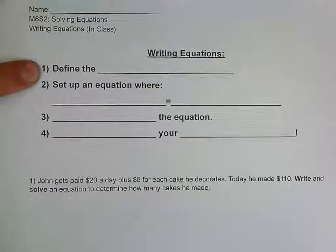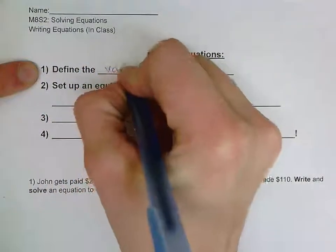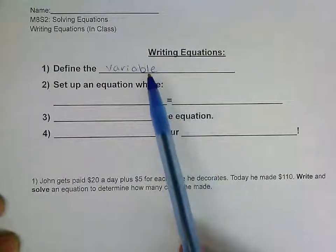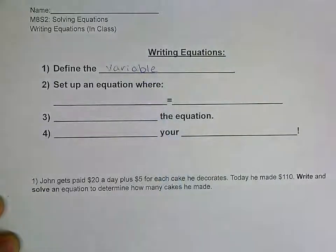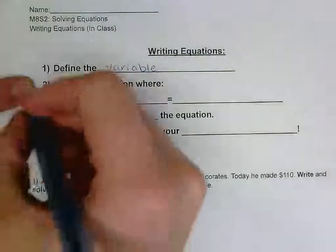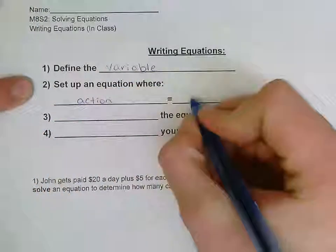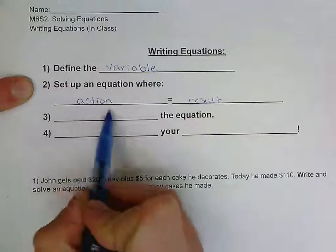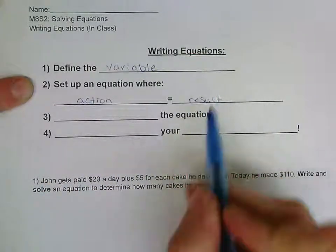The first thing we're always going to do is define the variable. When we define the variable, this is just the letter we're using to represent our unknown — we want to make sure that we know what it's representing in our equation. Second, we're always going to try to set up an equation where one side is an action and the other side is a result, asking ourselves what's happening in the problem and what's the result of that action.